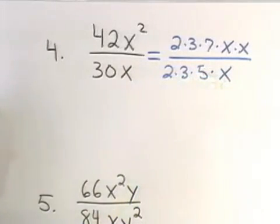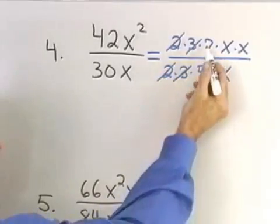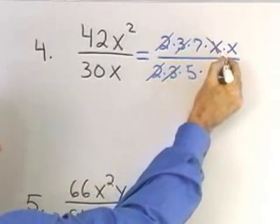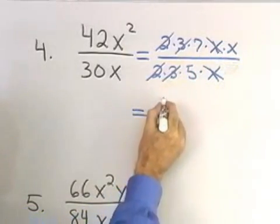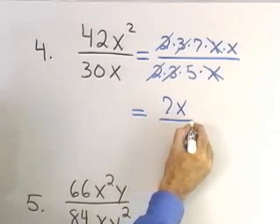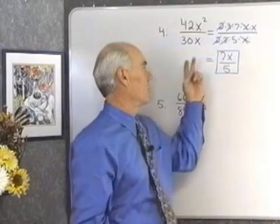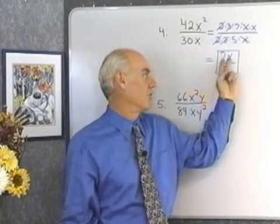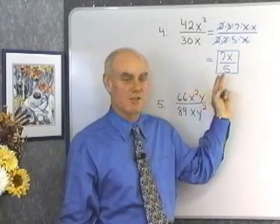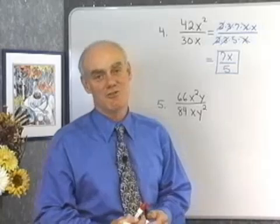Now, I'll divide out any factors they have in common. So, I divide out the 2's, divide out the 3's. There's no 7's or 5's in common, and I'll divide out one of the x's. When I do that in the numerator, I have left 7x, and in the denominator, I have left 5. So, that fraction 42x squared over 30x in reduced form is 7x over 5. Notice, it's in reduced form because it has no factors common to the numerator and denominator other than the number 1. Let's try another one of these.